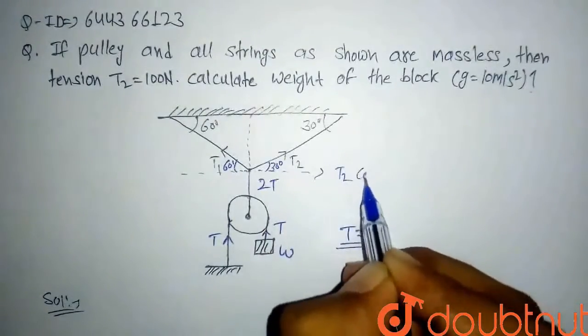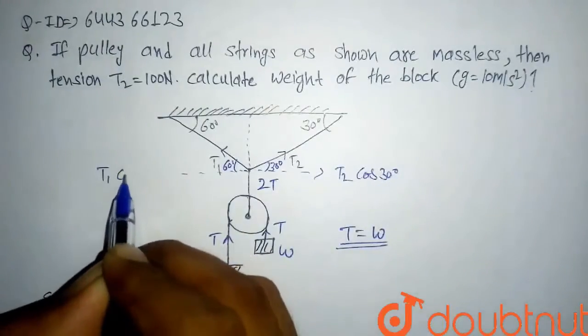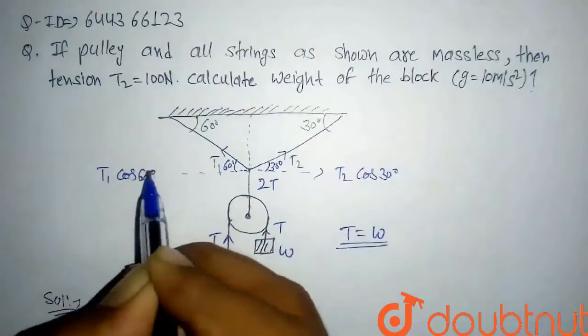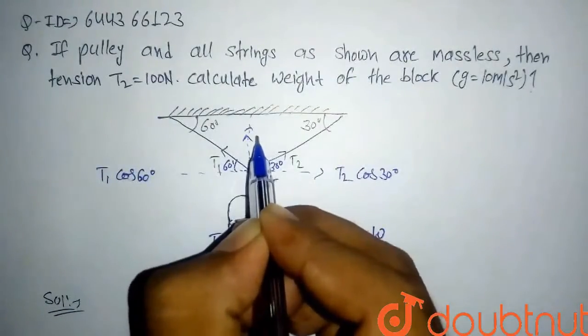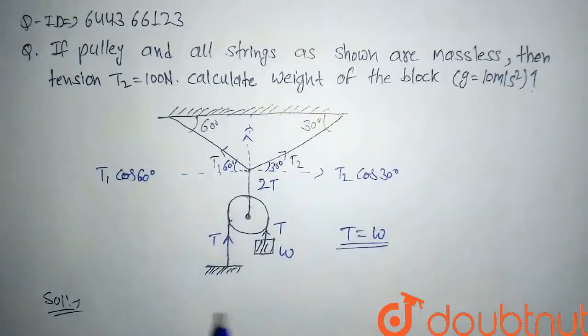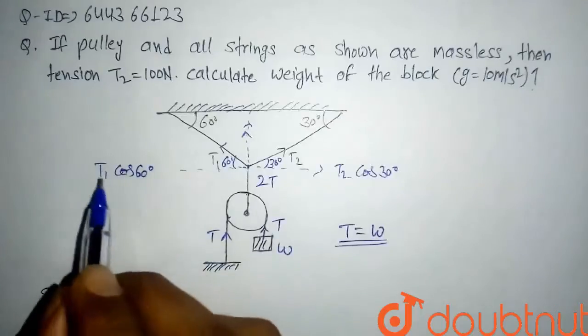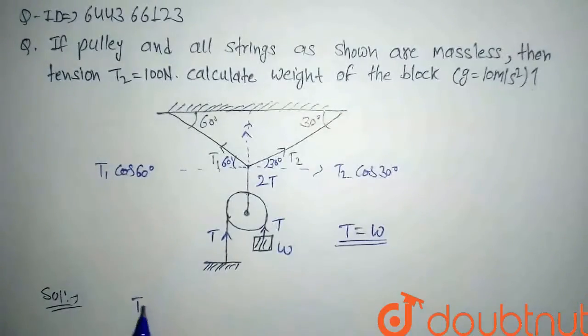The component T2 cos 30 and here will be T1 cos 60, and here will be two components: one will be T1 sin 60 and T2 sin 30. So here horizontal forces will be equal, so T1